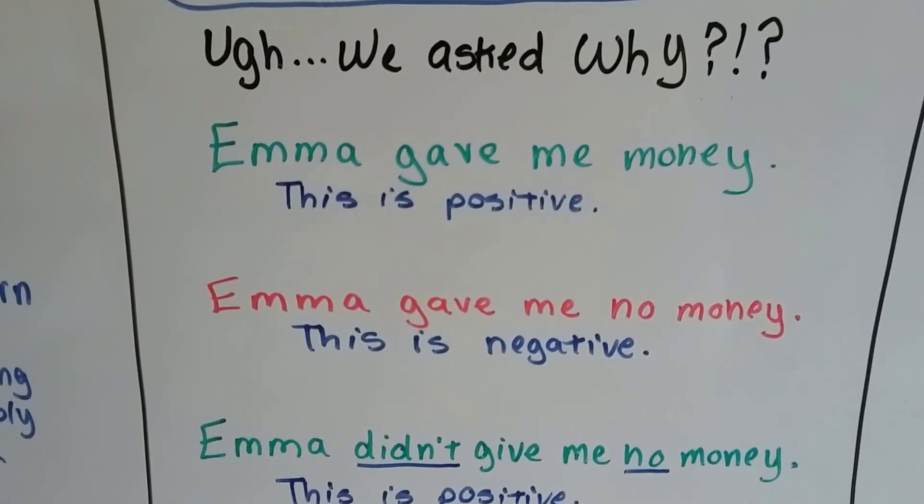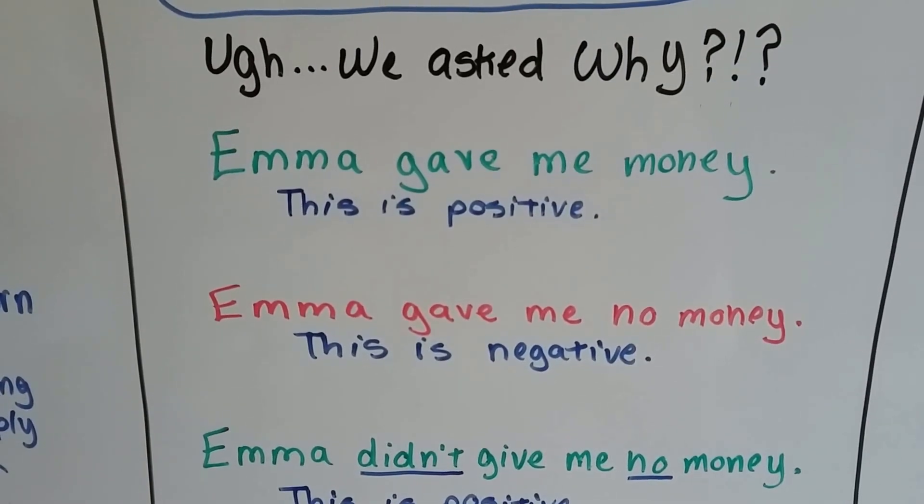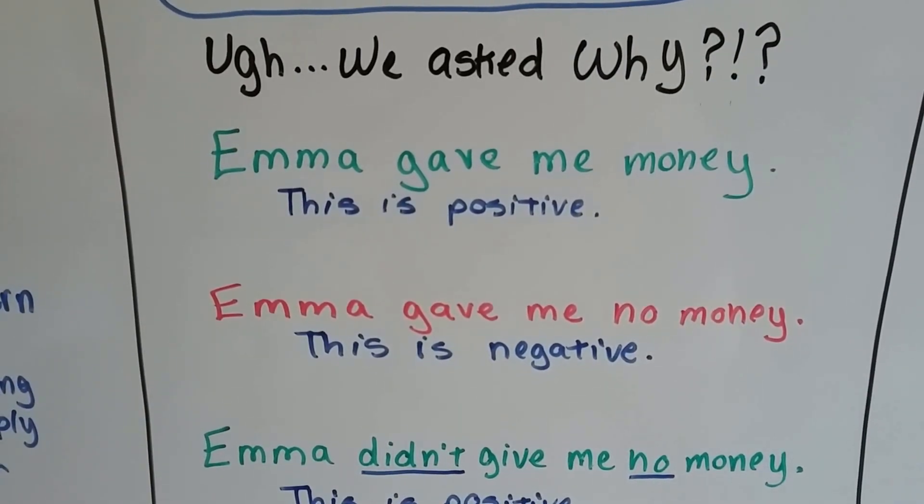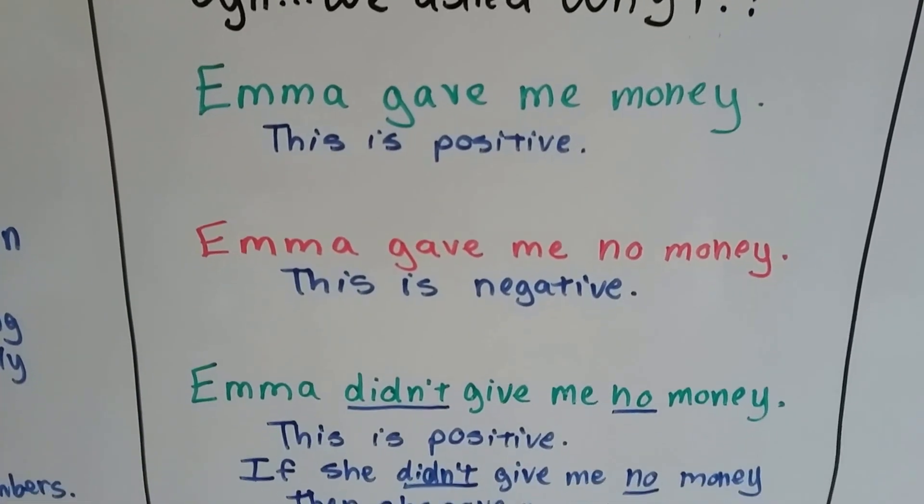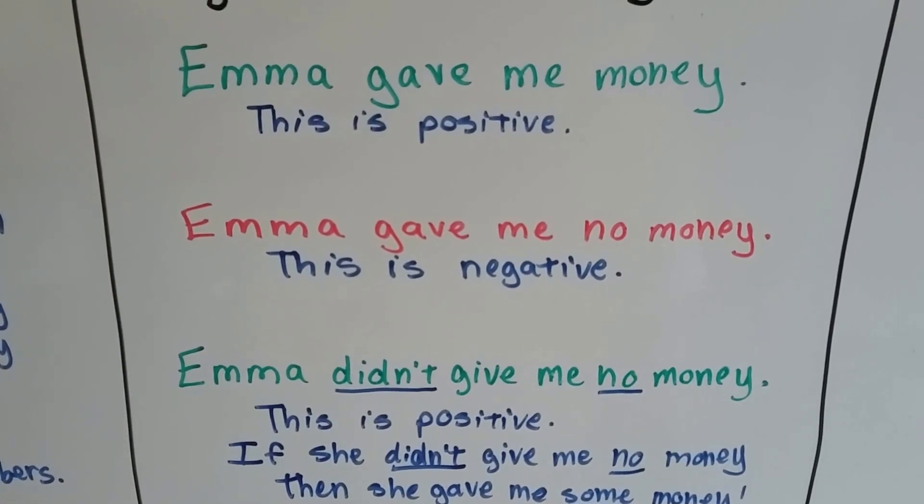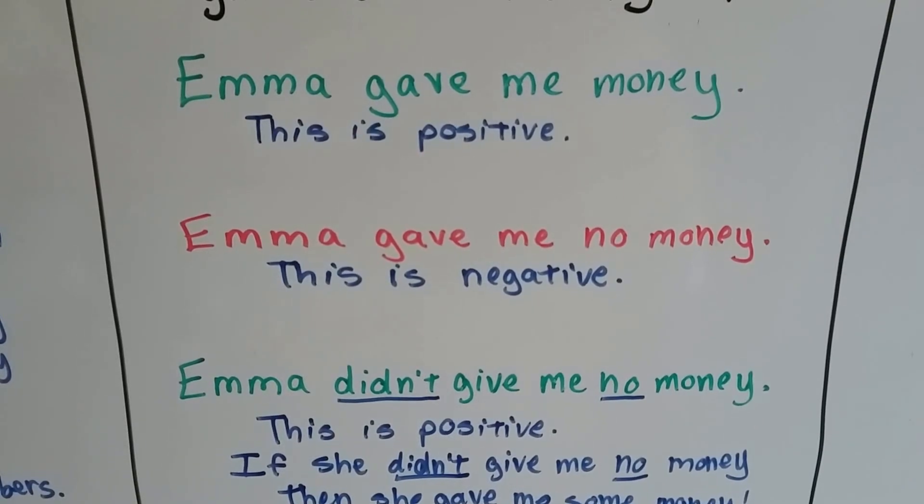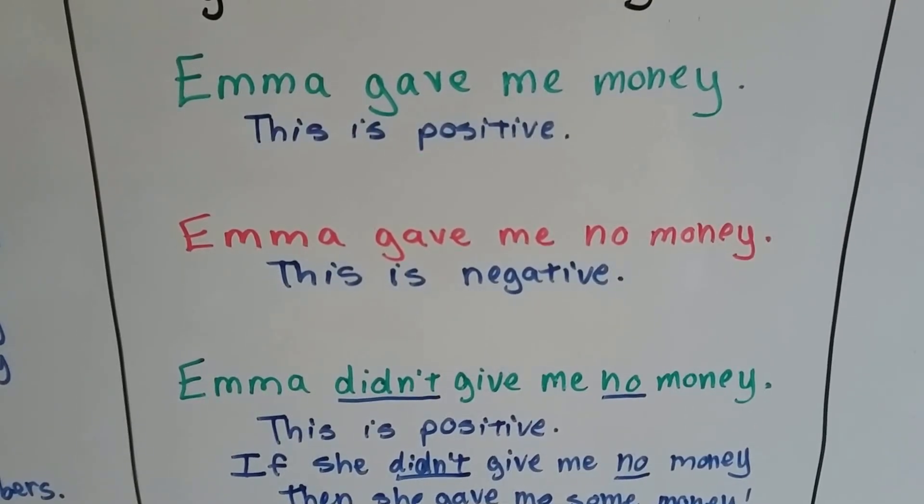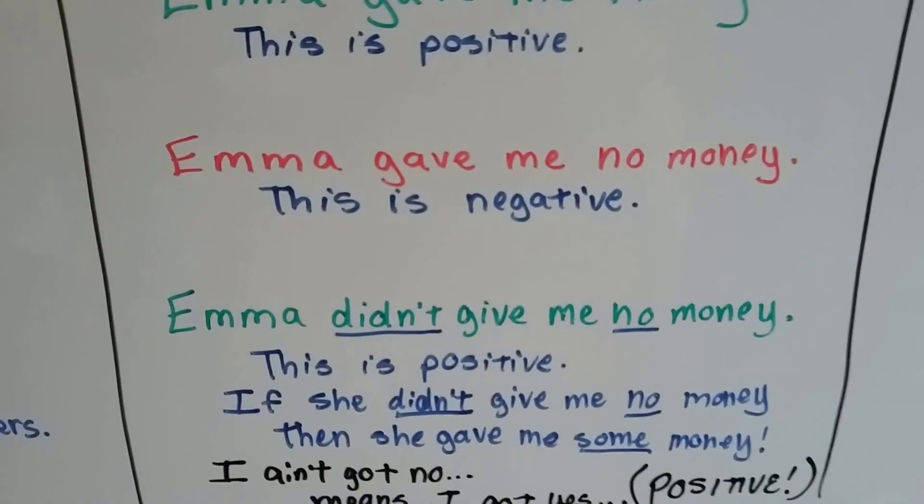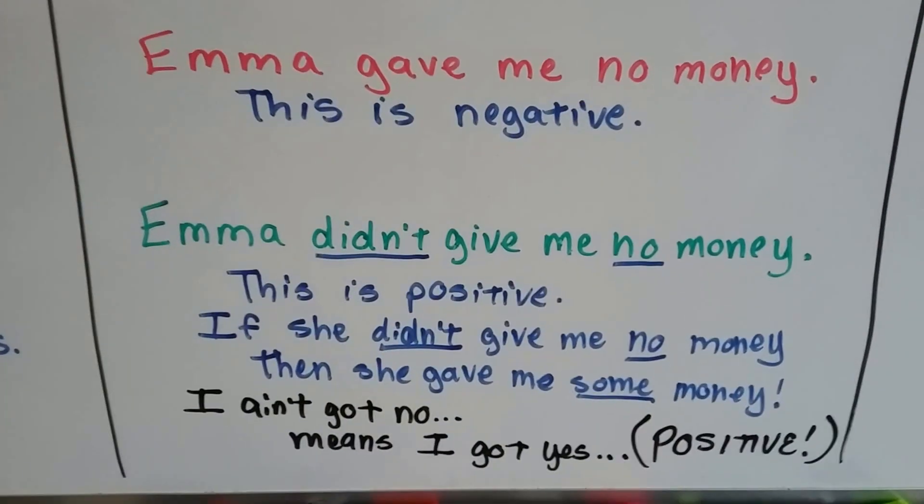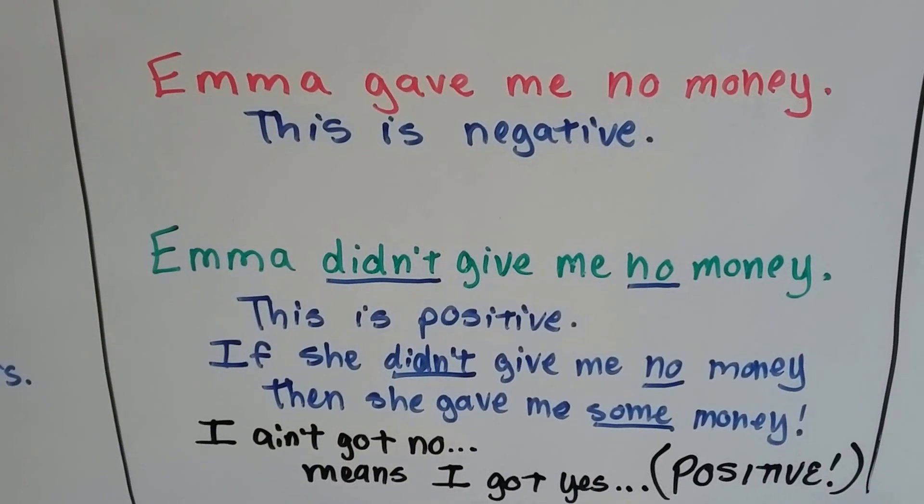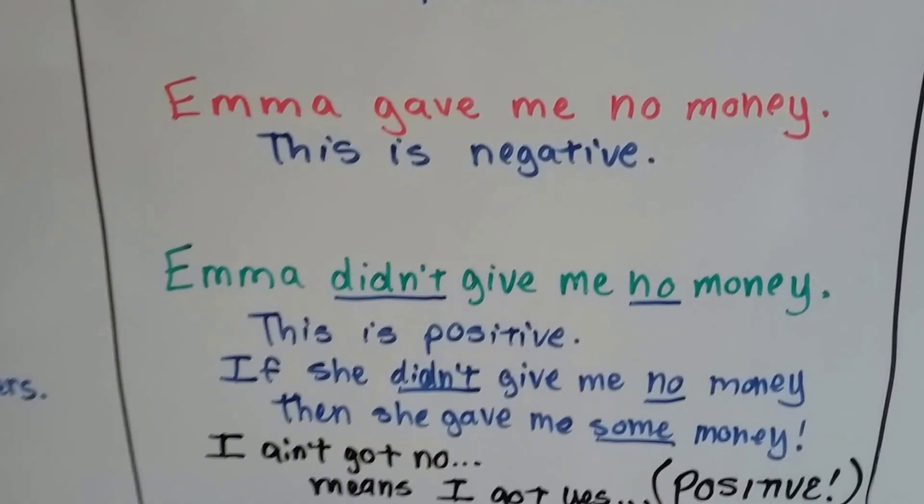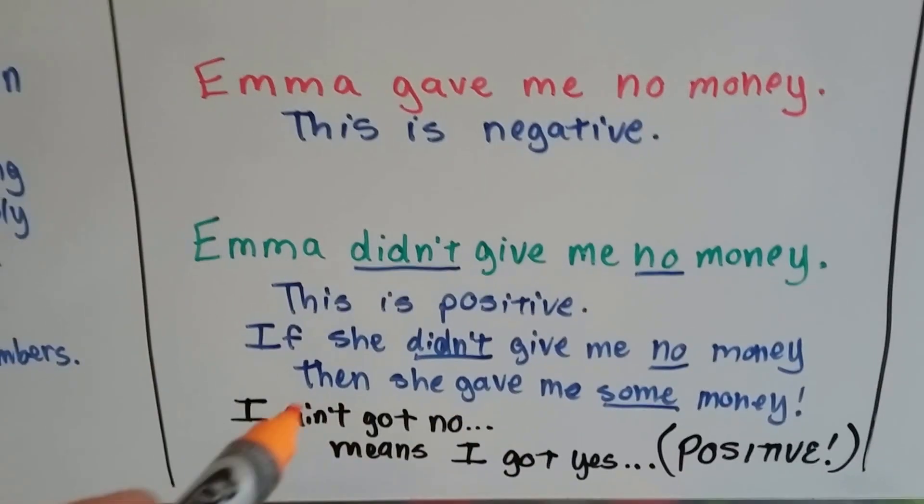Emma didn't give me no money. Think about that. If she didn't give me no money, this is positive. If she didn't give me no money, then she gave me some money. See? It's a double negative. It's like when people say I ain't got no. When people say I ain't got no, it means I got yes. Because if you don't have a no, then you must have a yes.